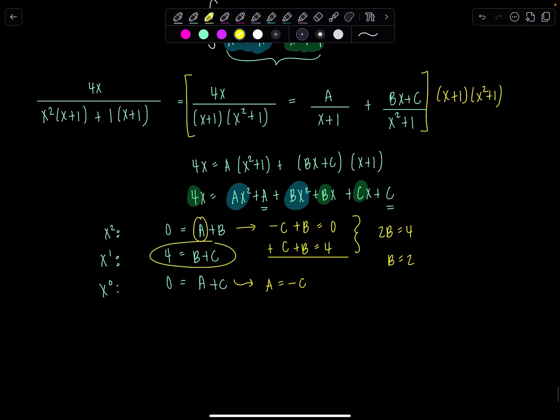And then if b is 2, then I can see c is 2, and then a is going to be negative 2. So everything just fell into place really beautifully. Okay, great.